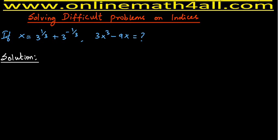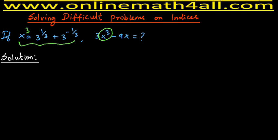Let us come to know the trick involved in solving this particular problem. The information is x equals 3 to the power 1/3 plus 3 to the power negative 1/3, and the question is to find 3x³ minus 9x. Since we need the value of x³, the first step is to take power 3 on both sides of the given information.